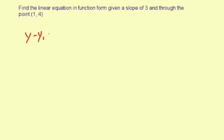The point-slope formula is: y minus y1 equals m times, in parentheses, x minus x1. Here, m is the slope, and x1 and y1 represent the coordinates of the given point.